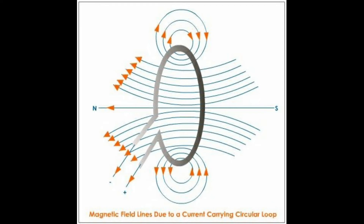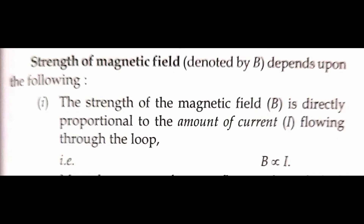By applying the right-hand rule, every section of the wire contributes to the magnetic field lines in the same direction within the loop. At every point of a current-carrying circular loop, the concentric circles representing the magnetic field become larger and larger as we move away from the wire. The strength of the magnetic field is denoted by capital B and depends on the following factors.